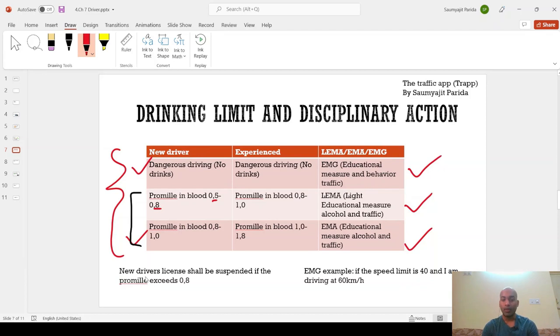And if the promil exceeds 0.8 limit, then the new driver's license can be suspended, this is very important to remember. And if the speed limit is 40 and I am driving at 60 km per hour, then this is an example of a dangerous driving. So, EMG can be imposed. So, these are the very small small things but very important to remember.